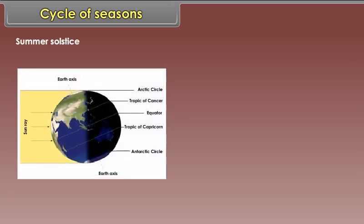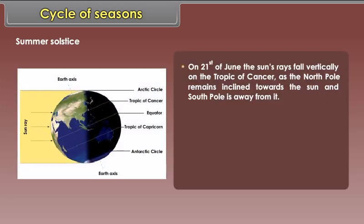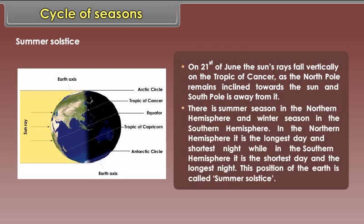Summer solstice. On 21st of June, the sun's rays fall vertically on the Tropic of Cancer as the North Pole remains inclined towards the sun and South Pole is away from it. There is summer season in the Northern Hemisphere and winter season in the Southern Hemisphere. In the Northern Hemisphere, it is the longest day and shortest night, while in the Southern Hemisphere, it is the shortest day and the longest night. This position of the earth is called summer solstice.